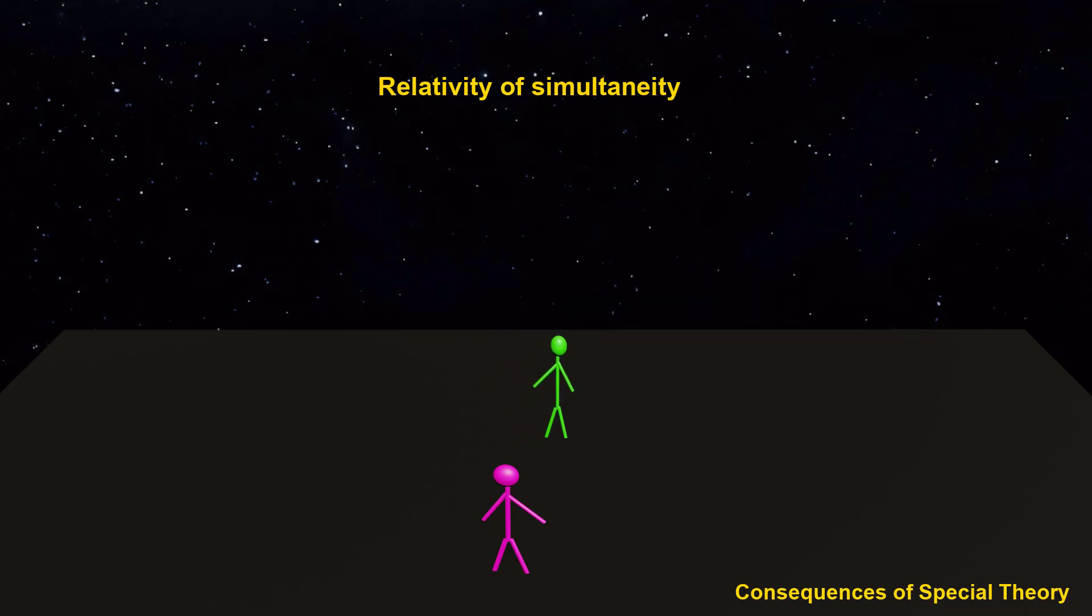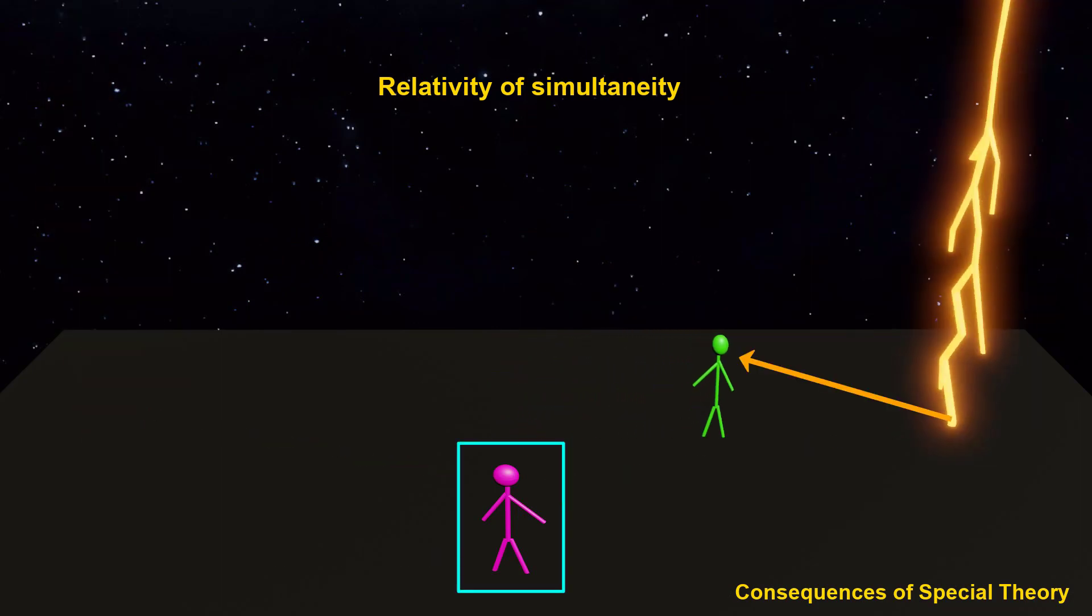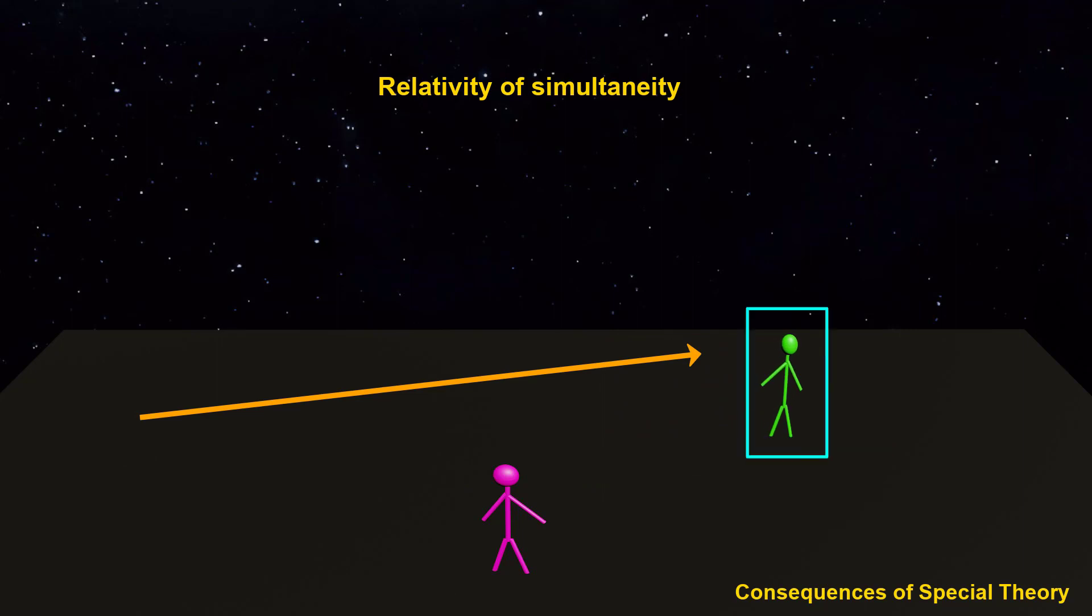Two events that are simultaneous for one observer may not be simultaneous for other observers.